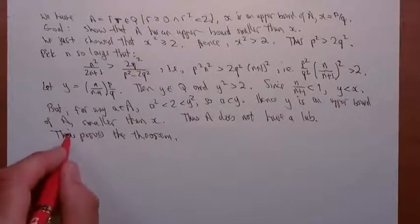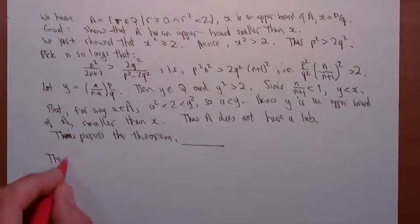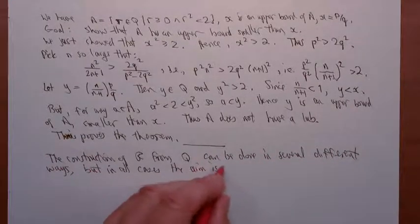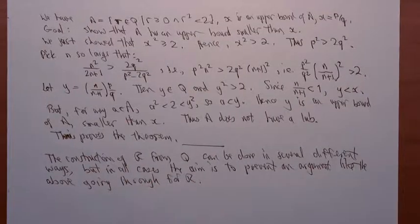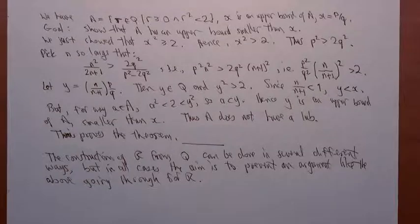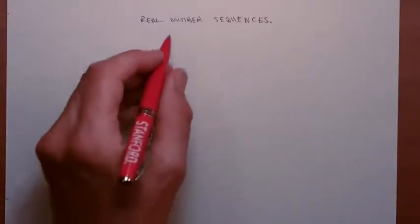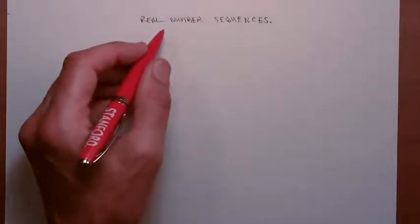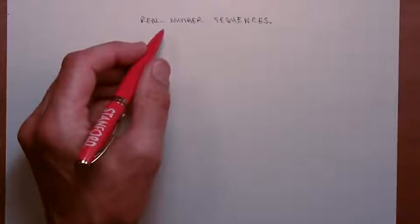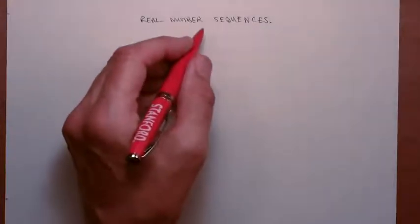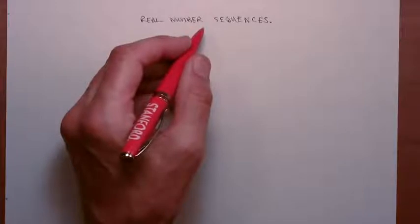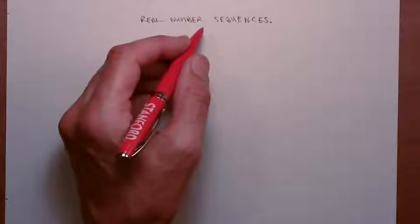This proves the theorem. Final remark: the construction of R from Q can be done in several different ways, but in all cases the aim is to prevent an argument like the above going through for R. And with that you're at the very gateway to modern real analysis. For our final topic in this course, I'd like to say a little bit about real number sequences. These are connected with one of the ways of constructing the real numbers from the rationals, and they give us a technique for doing a lot of work in real analysis.